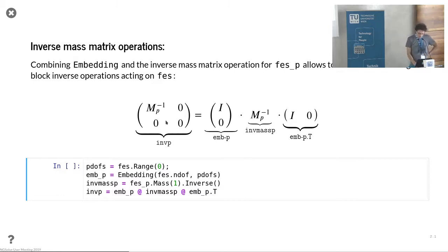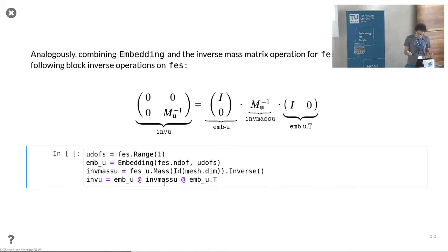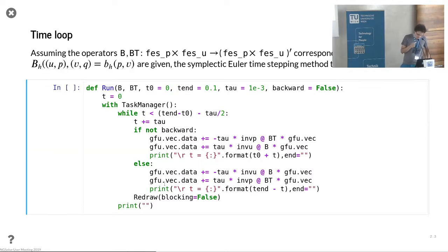We set up corresponding operators for the blocks. We want to have the inverse operation just on the first block, obtained by using the inverse operation on the pressure space and then combining this with the corresponding embeddings from the pressure to the product space. The same applies for the velocity.